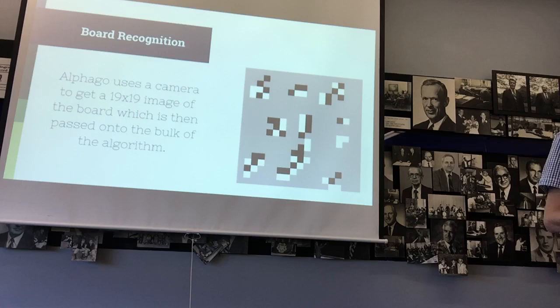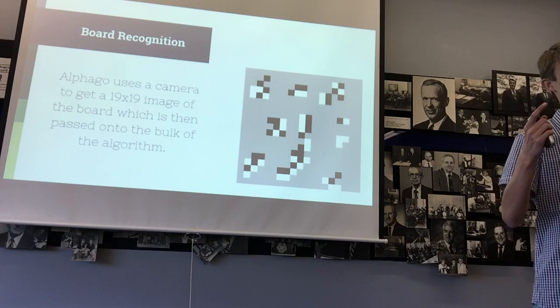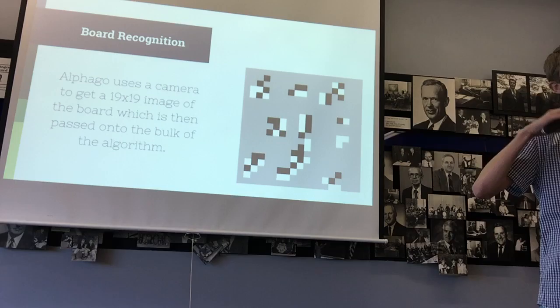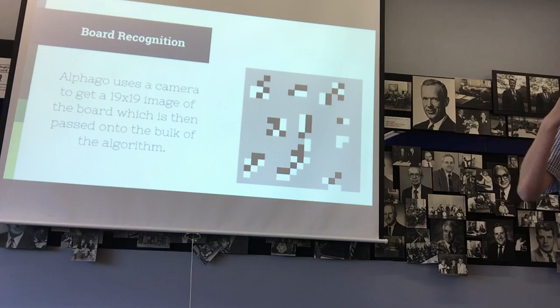So, the board recognition, AlphaGo uses a camera to get a 19x19 image of the board, which then it passes on to these neural networks, which then will go through and eliminate move choices, and then eventually it'll narrow it down, so that way it can pass those few select move choices into a tree search algorithm, which is then able to pick the best move.